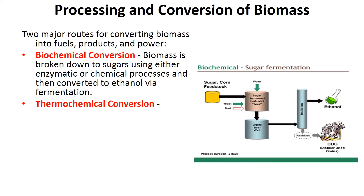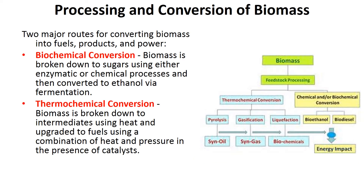In biochemical, biomass is first depolymerized to sugars using enzymatic or chemical methods and then fermented to ethanol. The other process is thermochemical, and as the name suggests, it uses heat to convert biomass to intermediates, which are then upgraded to fuels using heat and pressure in the presence of catalysts.